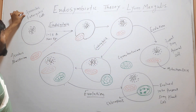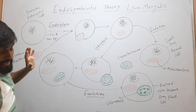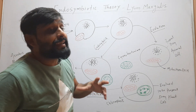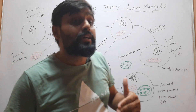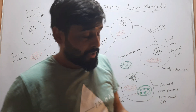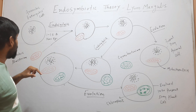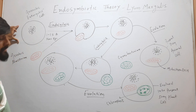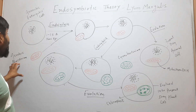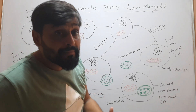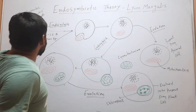Here, look at this cell — this is an anaerobic eukaryotic cell, meaning it is respiring in the absence of oxygen, so it cannot break down food completely. Around 1 to 1.5 billion years ago, this large anaerobic eukaryotic cell engulfed a small aerobic bacterium — a bacterium that respires in the presence of oxygen.